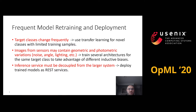presence of geometric and photometric variations in imagery that we receive from various sensors, as well as decoupling the inference service from the larger consuming system in order not to introduce any breaking changes.